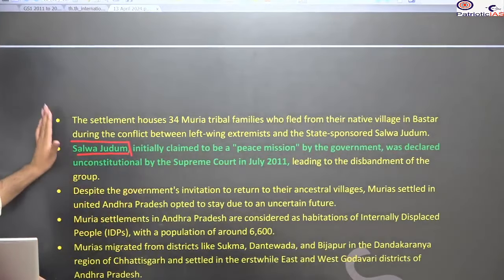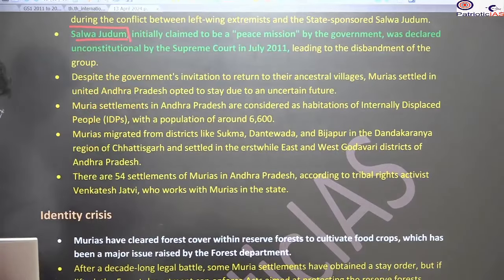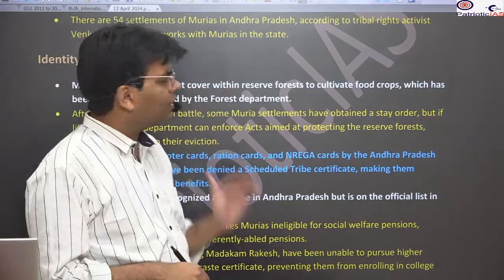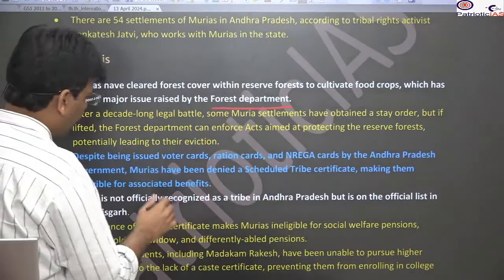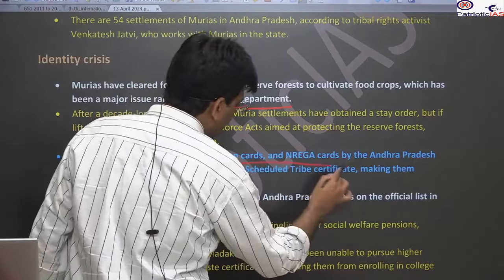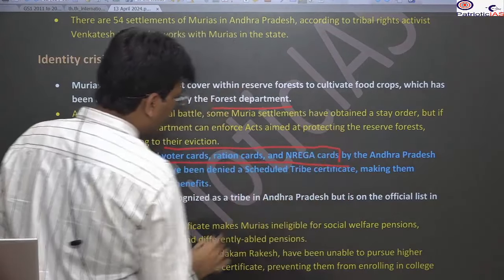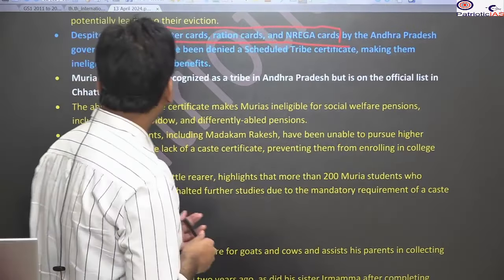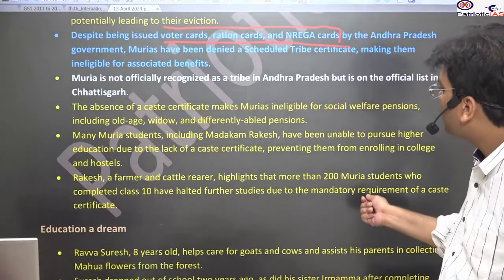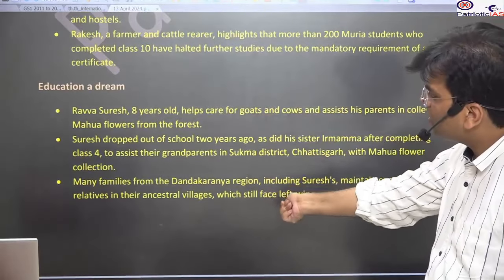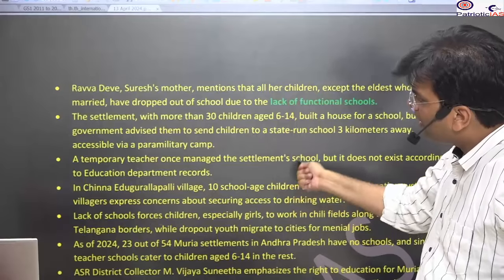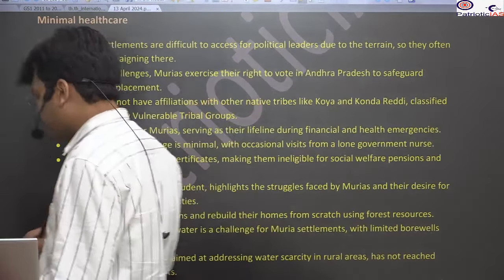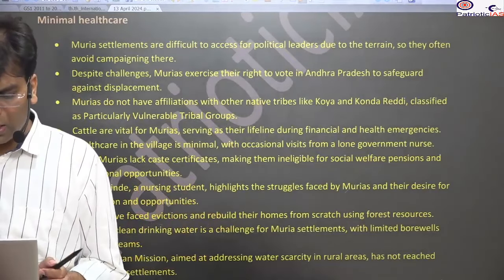The main issue the Muria community faces in Andhra Pradesh is an identity crisis — they are not recognized as forest dwellers by the forest department and thus cannot avail facilities. They have water cards, ration cards, and MNREGA cards, but due to non-availability of their caste certificates, they are unable to access facilities provided under tribal welfare schemes. They are also facing educational marginalization, lack of healthcare benefits, and various other difficulties. Different case studies illustrate the pathetic condition these people face.